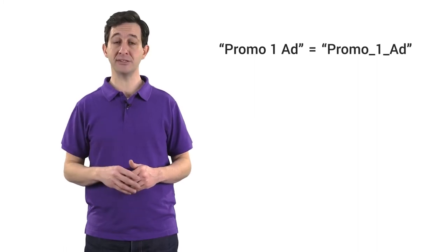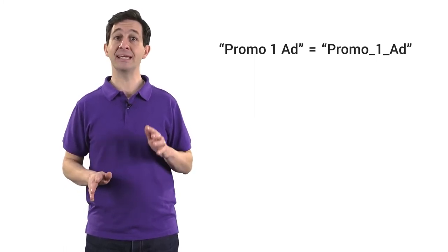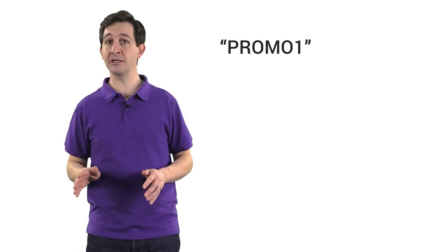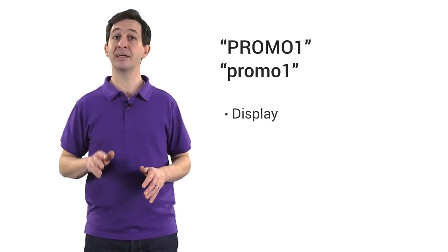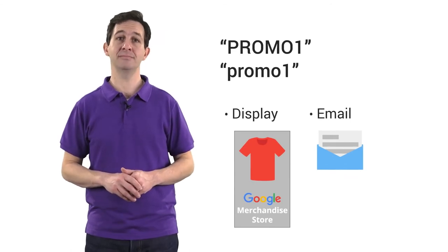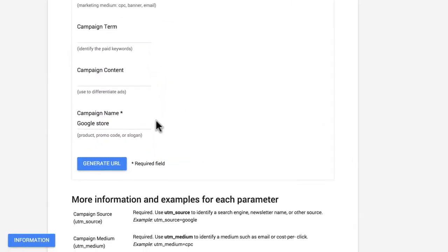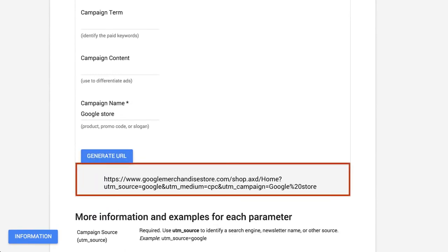A quick note about naming conventions: typically you'll use single words to name your tags. If you use phrases, the URL Builder will add underscores between the words. Be sure to use consistent spelling and capitalization when entering tag values, since Google Analytics is case sensitive — a campaign named Promo1 in all uppercase will show up separately from Promo1 in all lowercase. When you click Generate URL, the URL Builder generates the link with all the correct campaign parameters attached.